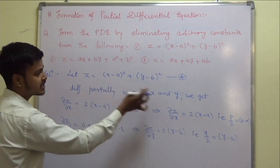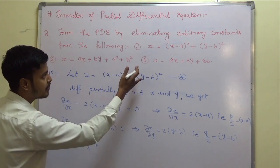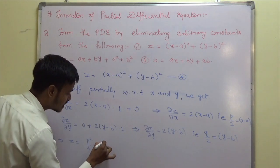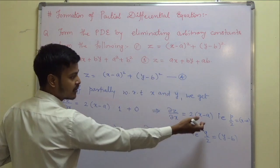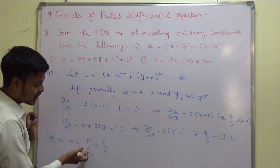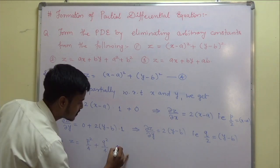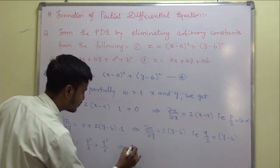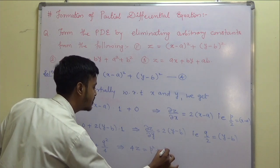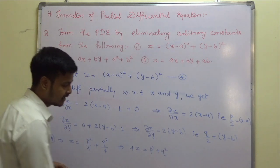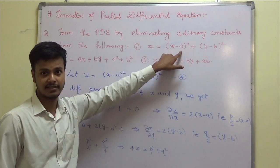Substituting back: z equals (x minus a) squared plus (y minus b) squared becomes z equals (p/2) squared plus (q/2) squared, which is p squared by 4 plus q squared by 4. Therefore, multiplying through by 4, we get 4z equals p squared plus q squared. This is the required partial differential equation.